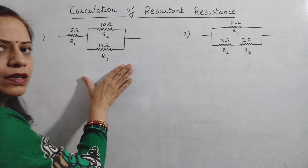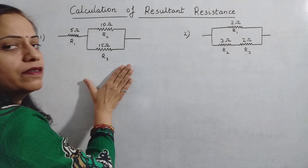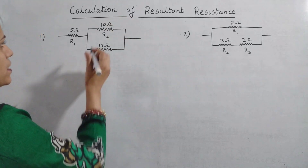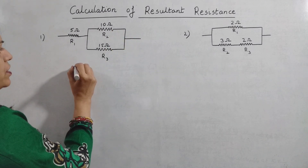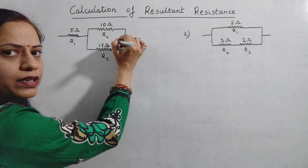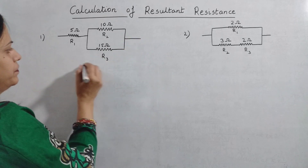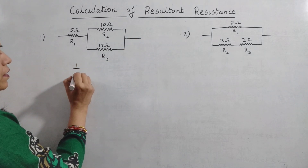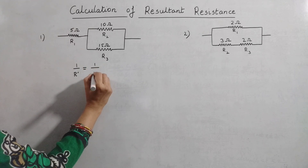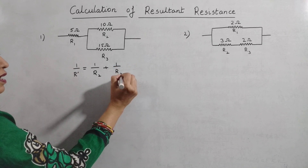For calculating the total resultant resistance of such a circuit, first we need to calculate the resultant of the parallel combination. Suppose we take this as R'. Since these two resistors are in parallel, we will use the formula for parallel arrangement: 1 upon R' is equal to 1 upon R2 plus 1 upon R3.